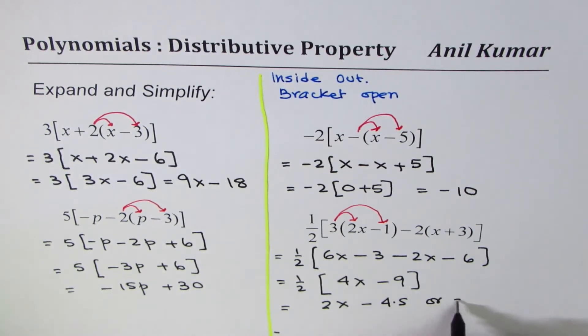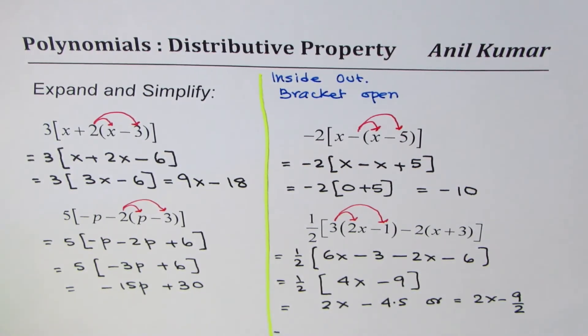Or you can also write this as 2x minus 9 over 2. Both are correct. So I hope with this you have learned that whenever you have to apply distributive property and you have a complicated polynomial to begin with, you have to start from the inside terms.